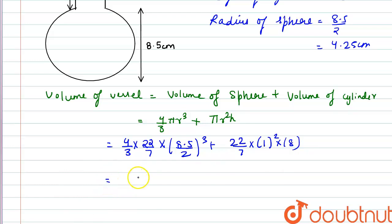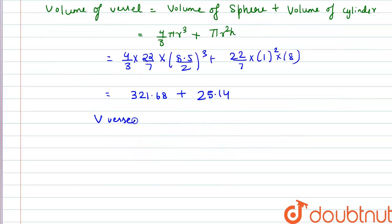So that comes out to be volume of the sphere is 321.68 plus the volume of the cylinder is 25.14. So the volume of the vessel comes out to be 346.5 cm cubed.